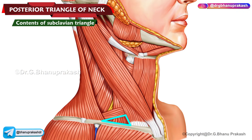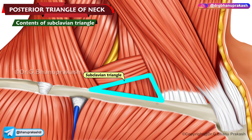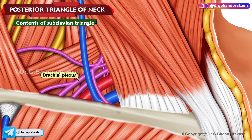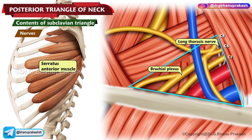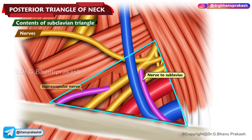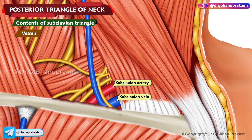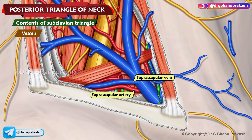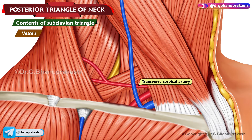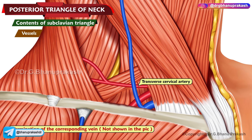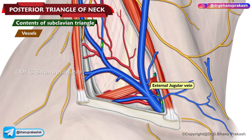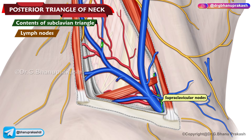Contents of the subclavian triangle. The subclavian triangle contains nerves, vessels, and lymph nodes. The nerves include the roots and trunks of the brachial plexus, nerve to serratus anterior muscle, nerve to subclavius muscle, and the suprascapular nerve. The vessels include the third part of the subclavian artery and subclavian vein, the suprascapular artery and vein, and the commencement of the transverse cervical artery and the termination of the corresponding vein. The lower part of the subclavian vein can also be seen within the subclavian triangle. A few nodes of the supraclavicular chain can also be found in this triangle.